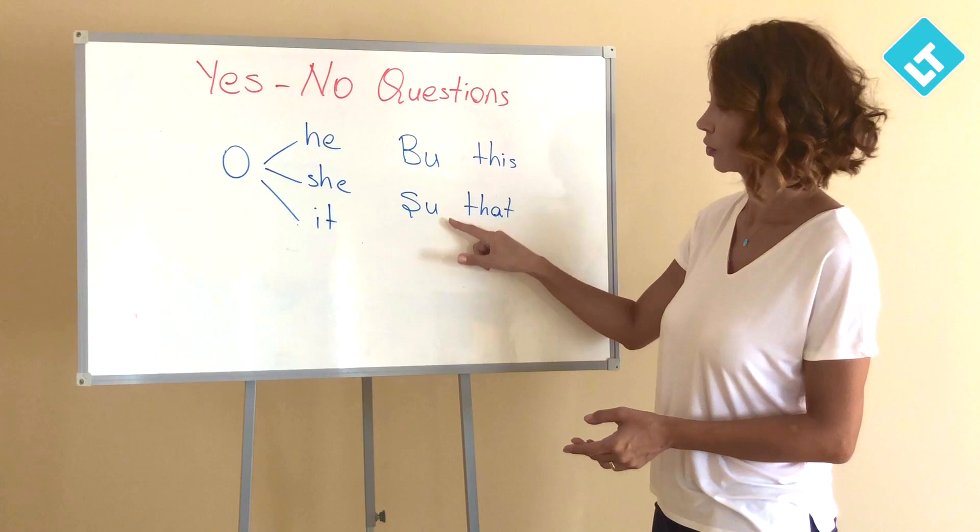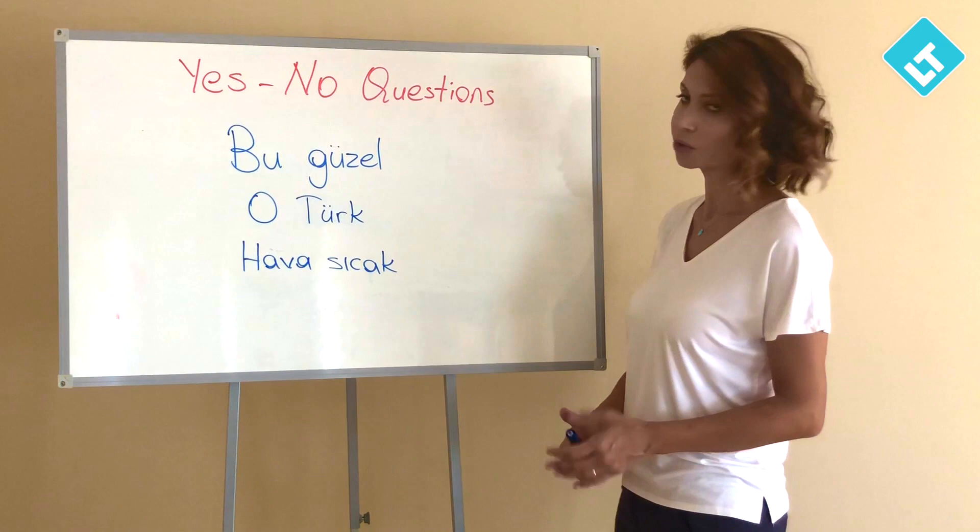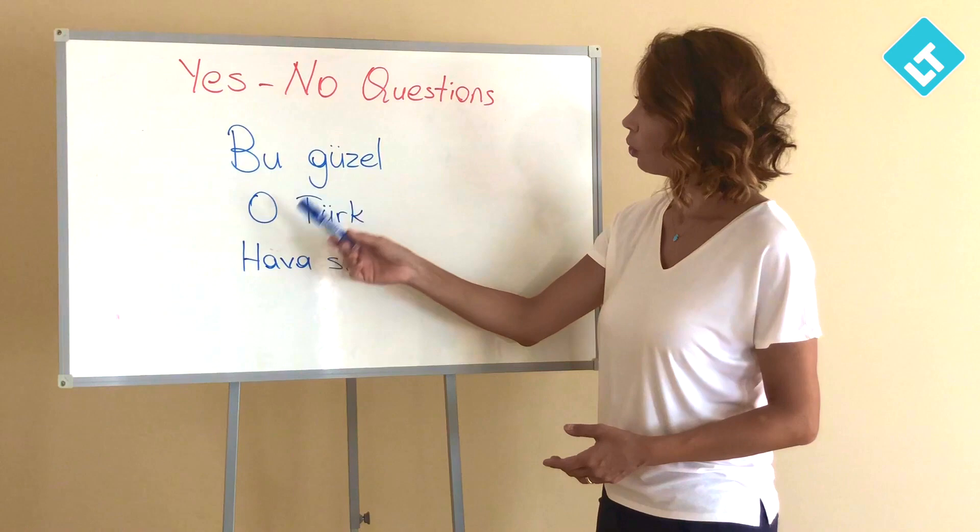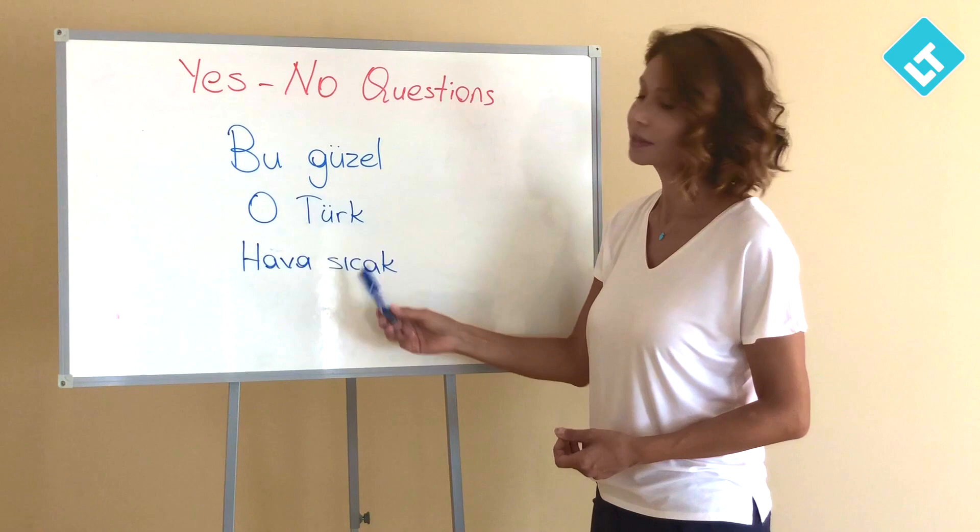Bu is 'this,' şu is 'that.' Look at some examples for the third singular person. Bu güzel — this is nice. O Türk — he or she is Turkish. Hava sıcak — the weather is hot.